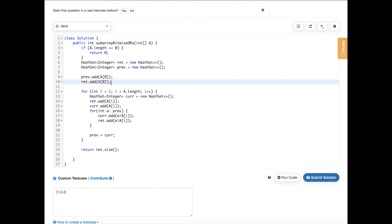First, we know a[0] has to exist because the array length doesn't equal zero, so we're going to add a[0] to previous and the return set.